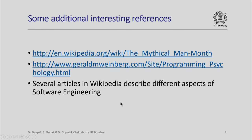There are some additional interesting references. The first is a great book — actually a collection of essays on software engineering titled 'The Mythical Man-Month', written by Frederick Brooks in 1975, and the observations made then are valid even today. Here is another reference to a timeless book called 'The Psychology of Computer Programming' written by Dr. Gerald M. Weinberg — curiously, many of those observations are also valid even today. There are several Wikipedia articles describing different aspects of software engineering, and I would request you to refer to those and to the many books on software engineering available in the market.